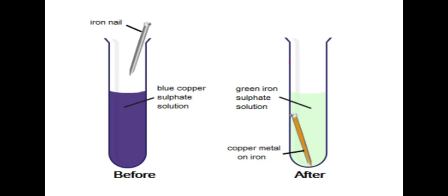Now add a few drops of sulfuric acid and water. Dissolve and shake the solution, and then place iron nails into the test tube.